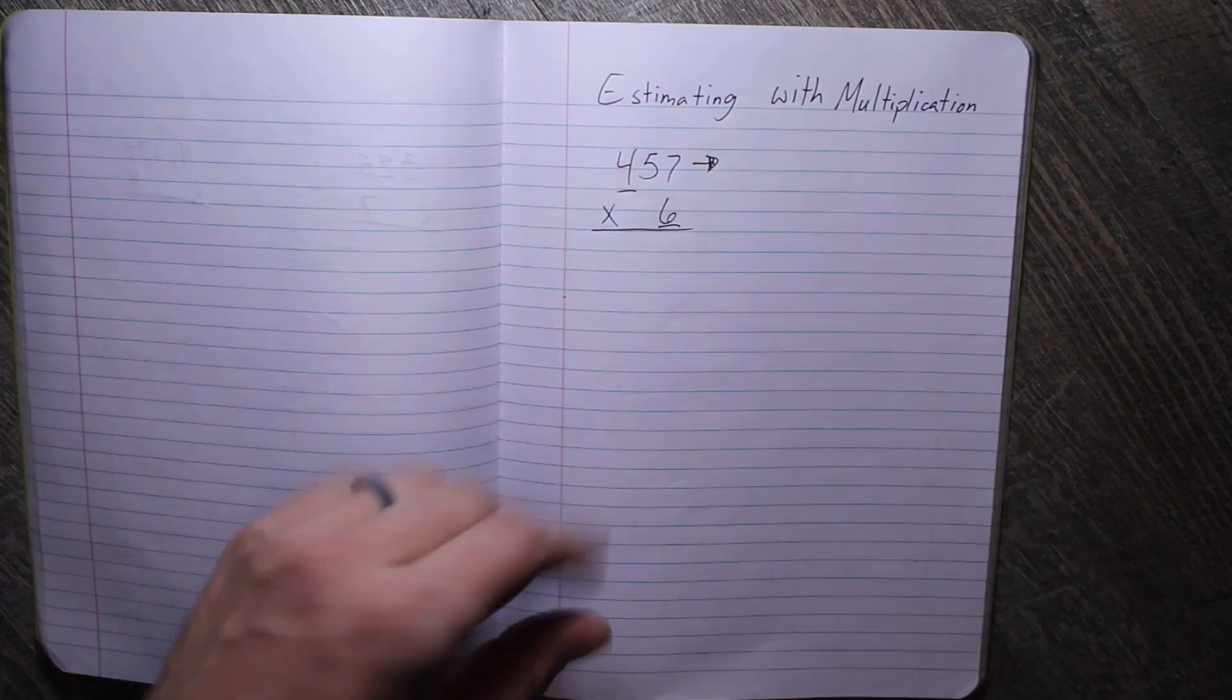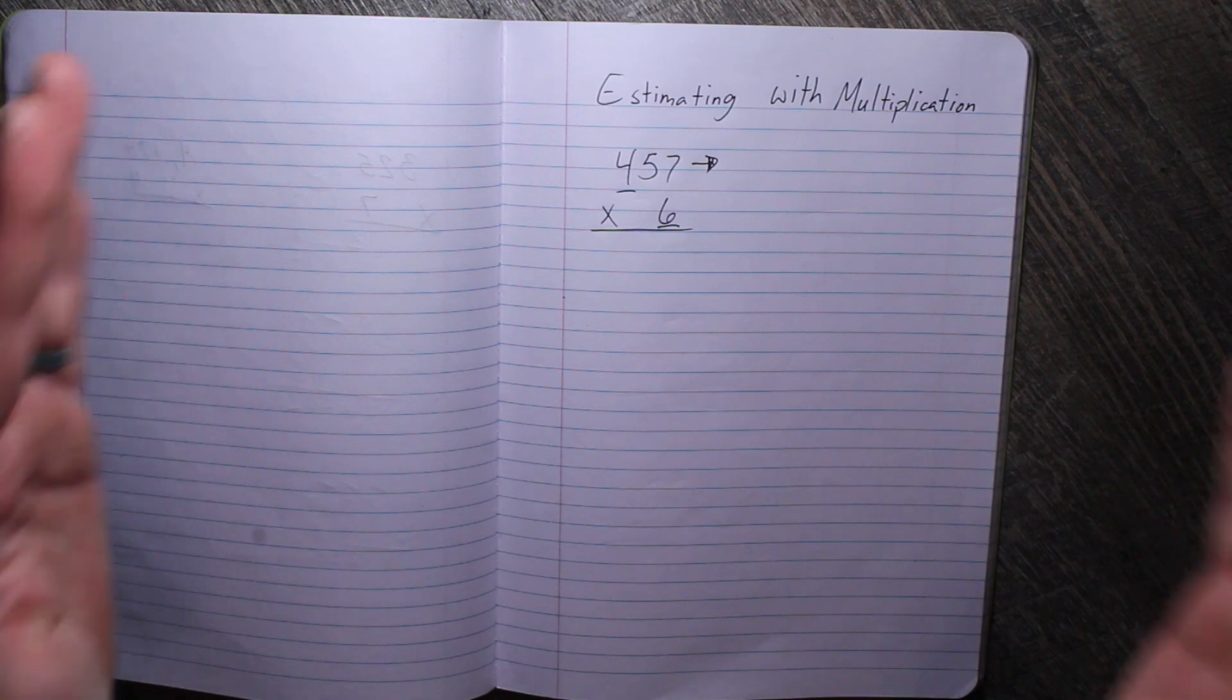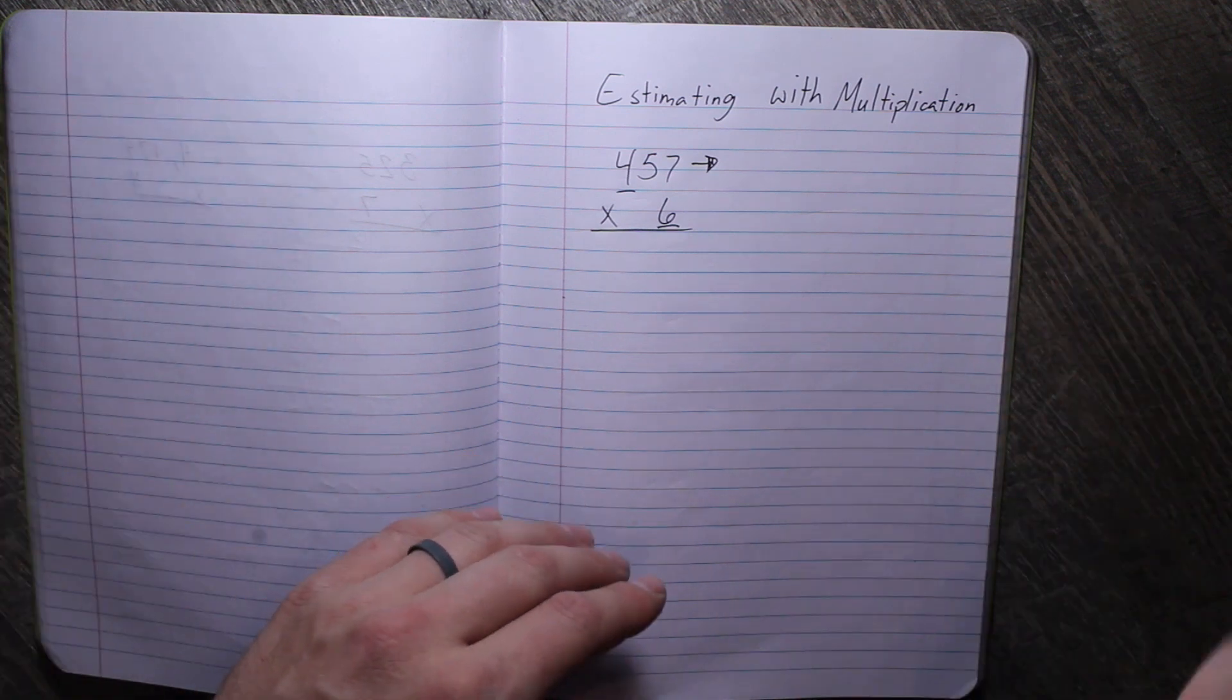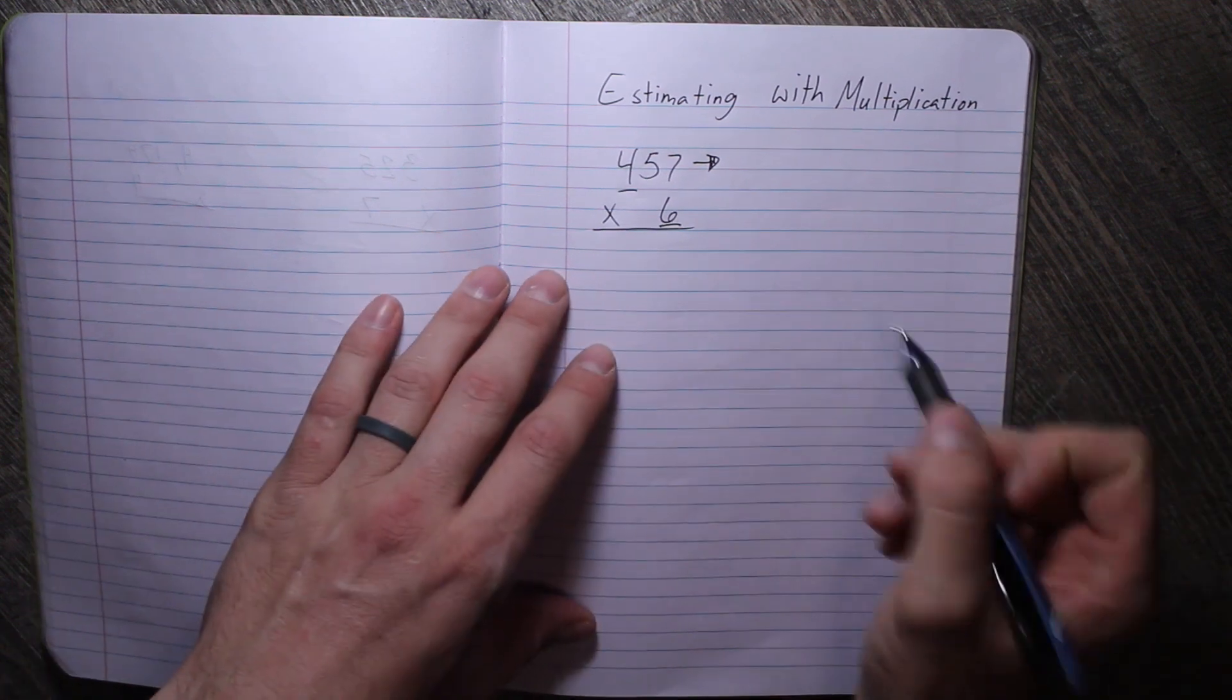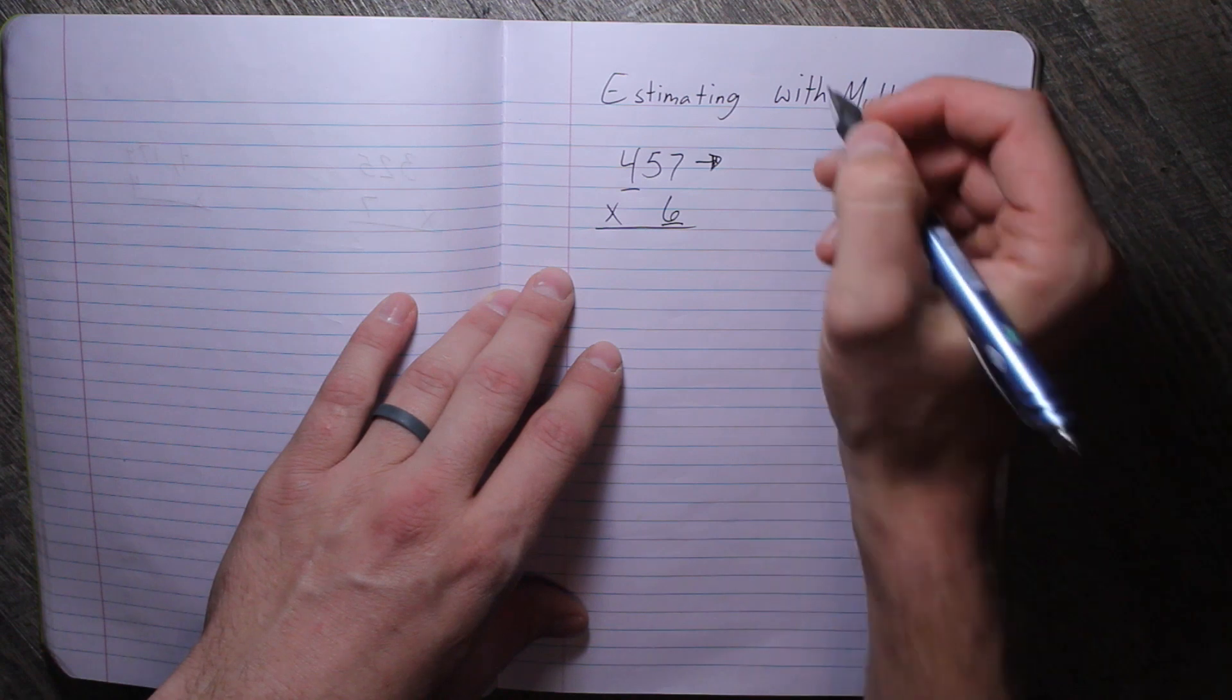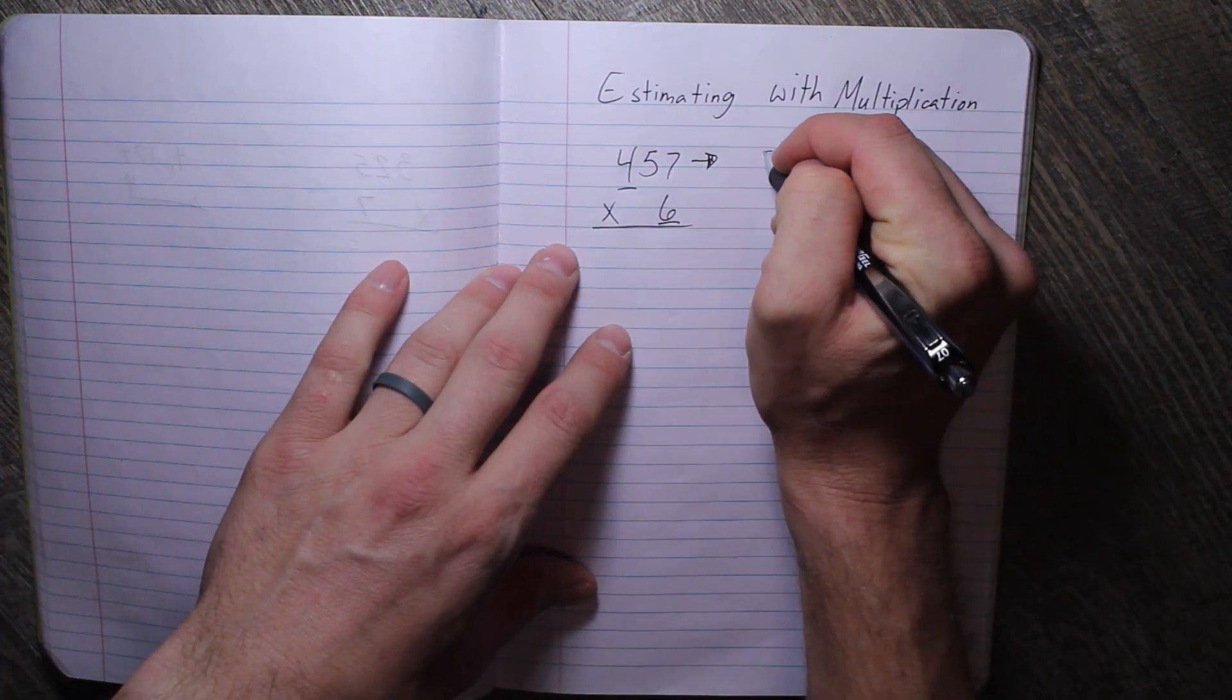So is 457 closer to 400, or is it closer to 500? If you're looking at a number line, is it closer to 400 or 500? Well, of course, it's closer to 500. It's past that midpoint of 450. So we are going to round this to 500.